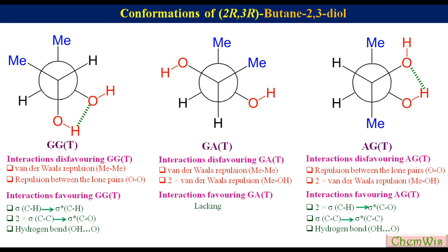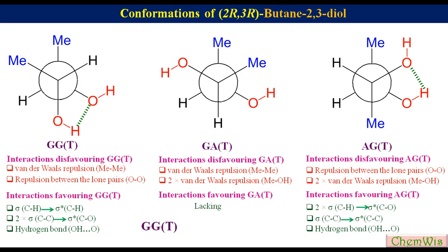Thus, GAT with three unfavorable interactions and no important favorable interactions is the least stable. AGT with three destabilizing and three stabilizing interactions is more stable than GAT. GGT with only two destabilizing interactions and four stabilizing interactions is the most stable conformer. The stability order is GGT > AGT > GAT in low polar media. On passing to very polar or protic solvent, the population of GGT decreases.